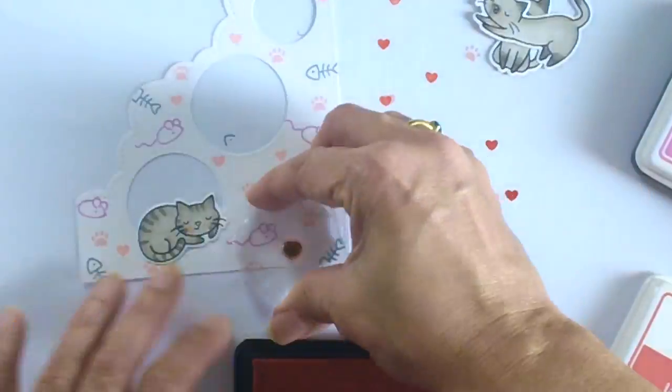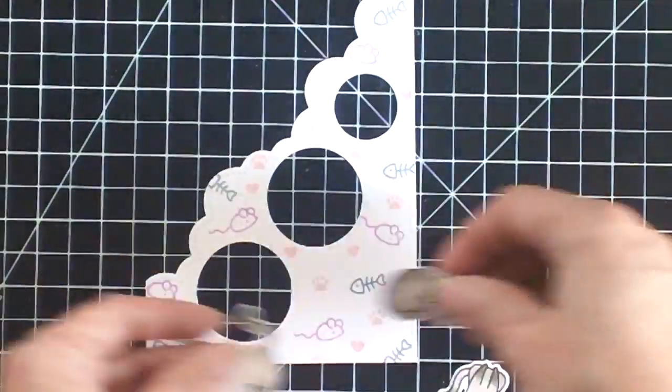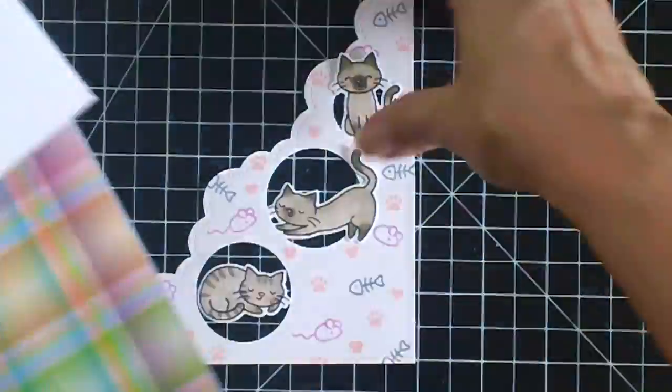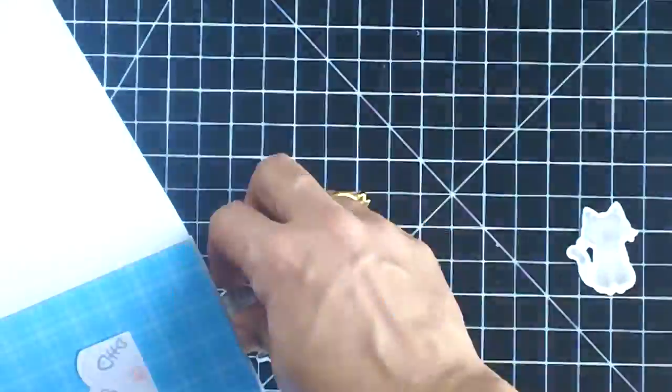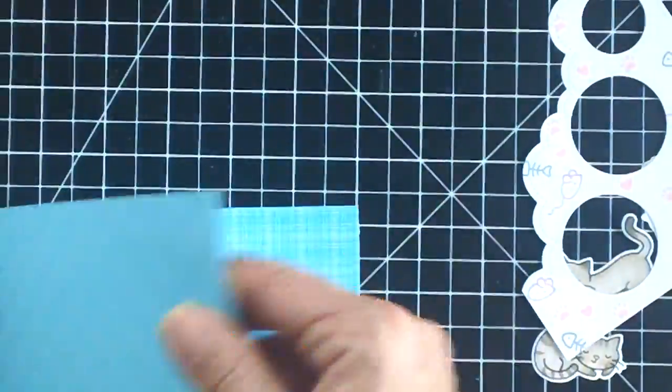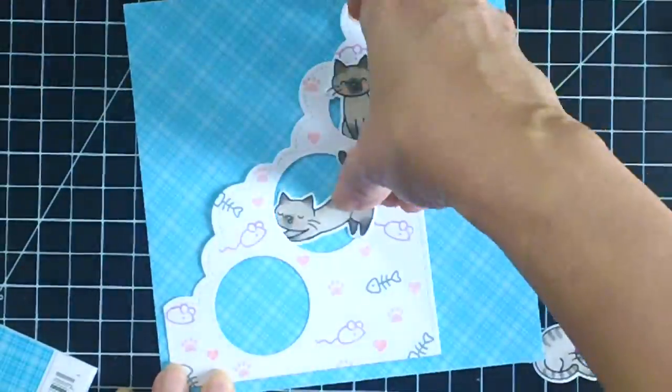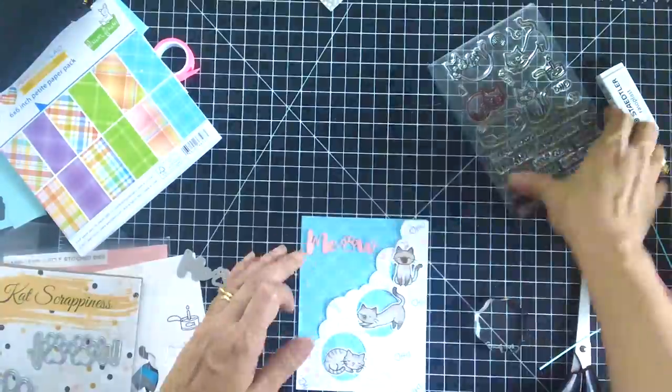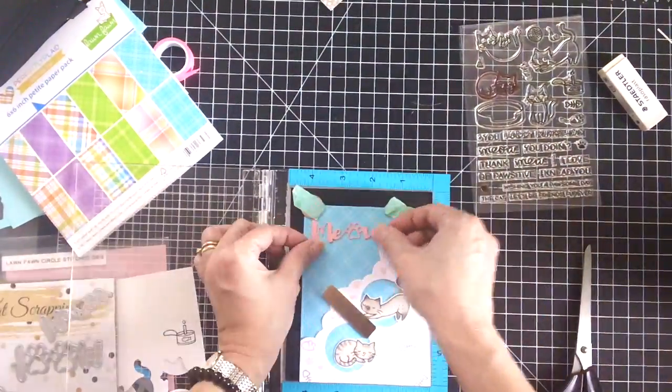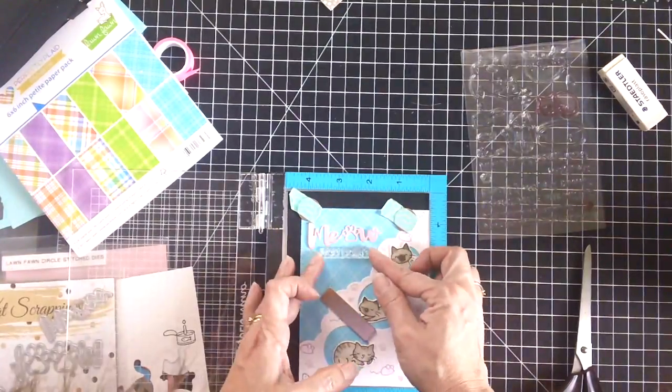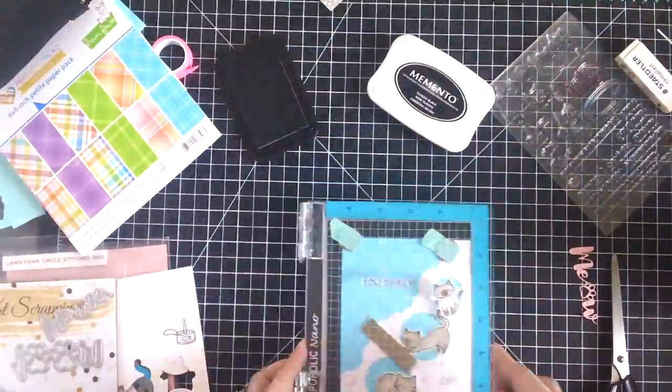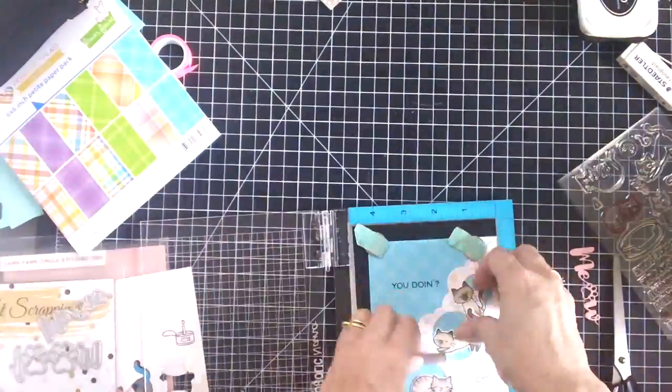And now I'm ready to choose my pattern paper from the six by six paper pad that they had sent me. This is the new one that was just released, and then I have this die that cuts out the word meow with the little paw prints, so I thought this was perfect for my card. And I'm just stamping the you doing on the card front here using my memento tuxedo black ink so I can line them up properly.